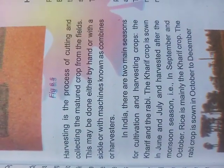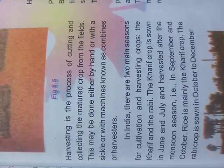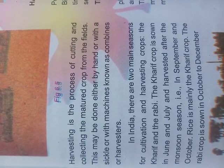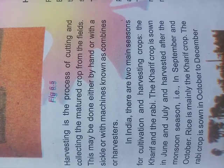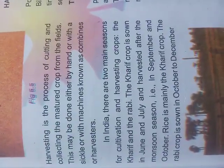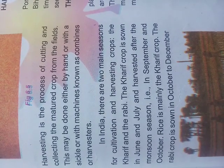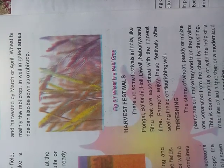In India there are two main seasons for cultivation and harvesting: the Kharif crop and the Rabi crop. The Kharif crop is sown in June and July and is harvested at the end of monsoon season, that is in September and October. Rice is the main Kharif crop. The Rabi crop is sown in October to December and is harvested by March or April. Wheat is mainly a Rabi crop.